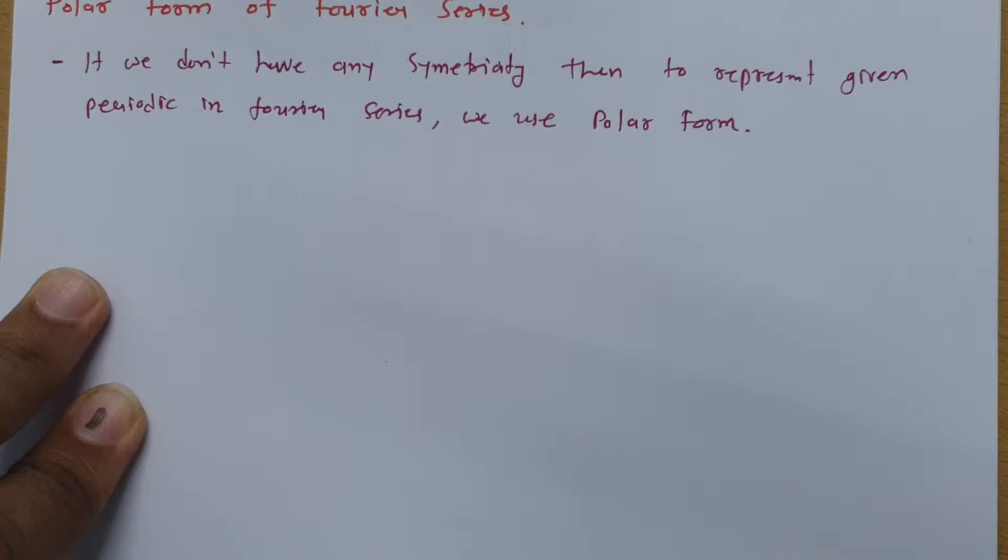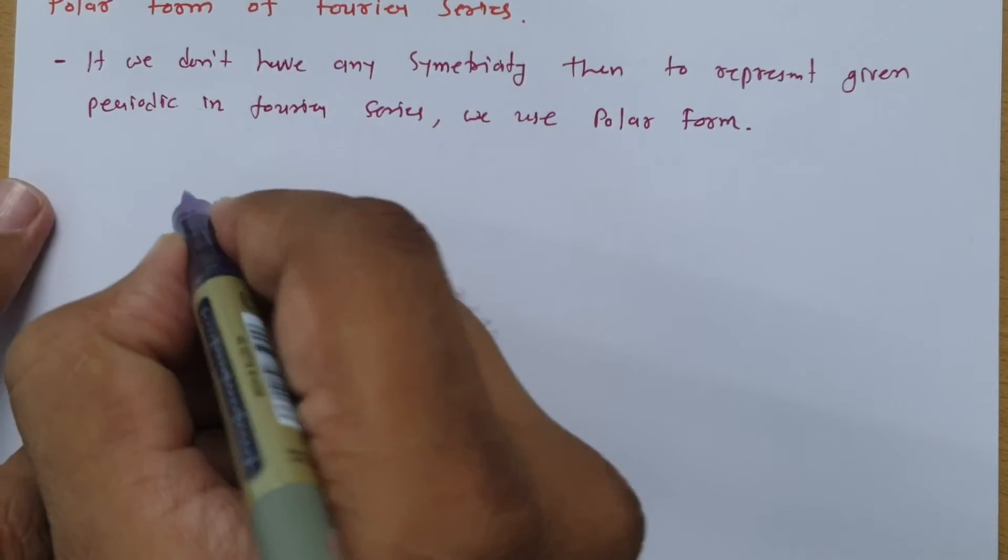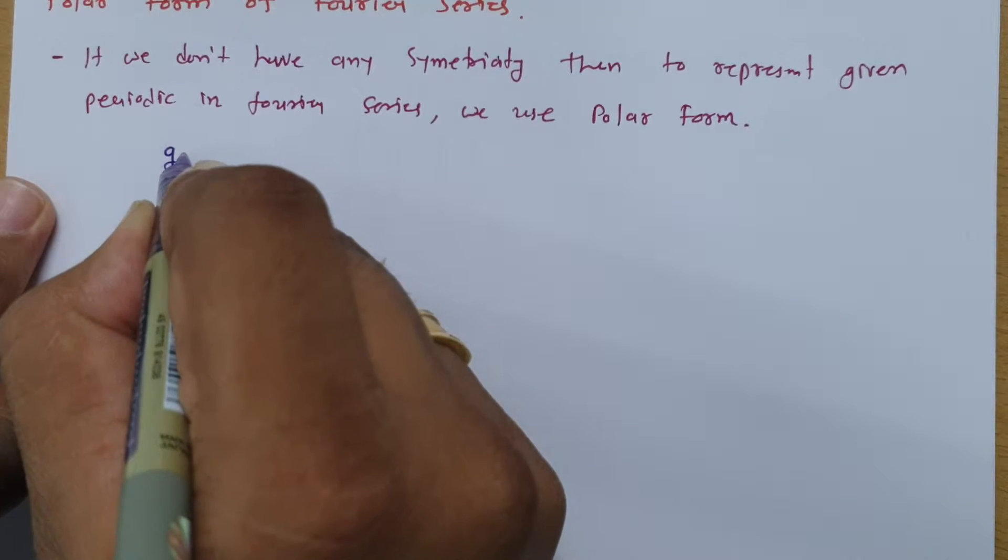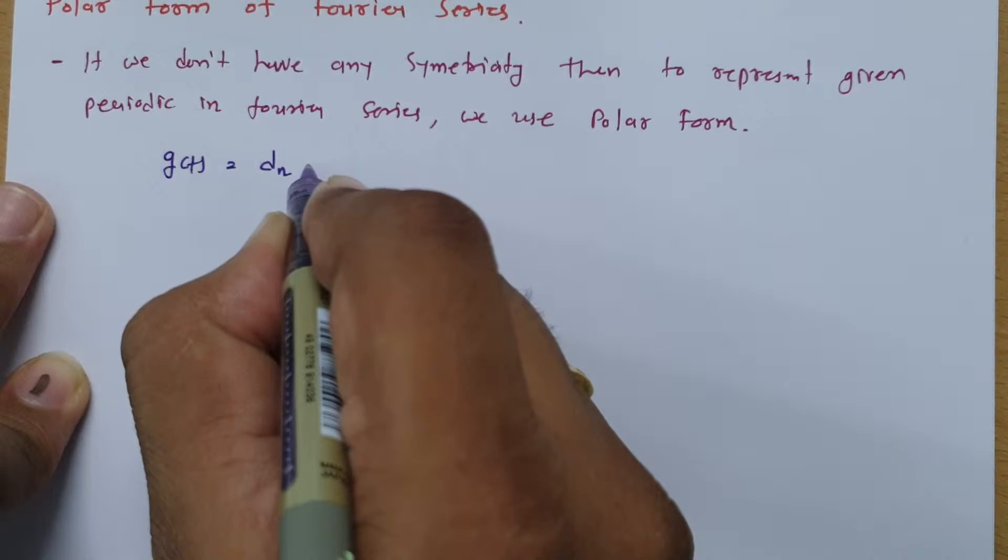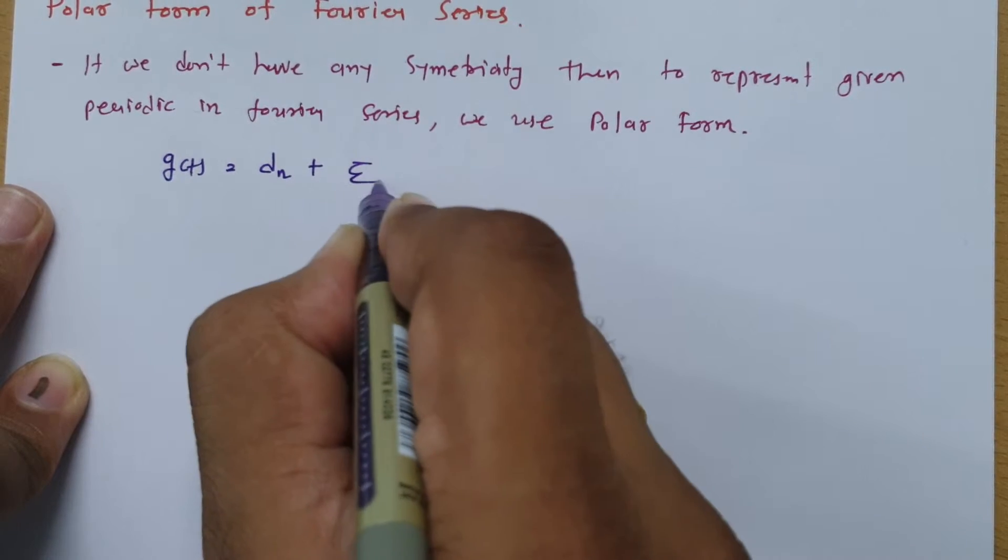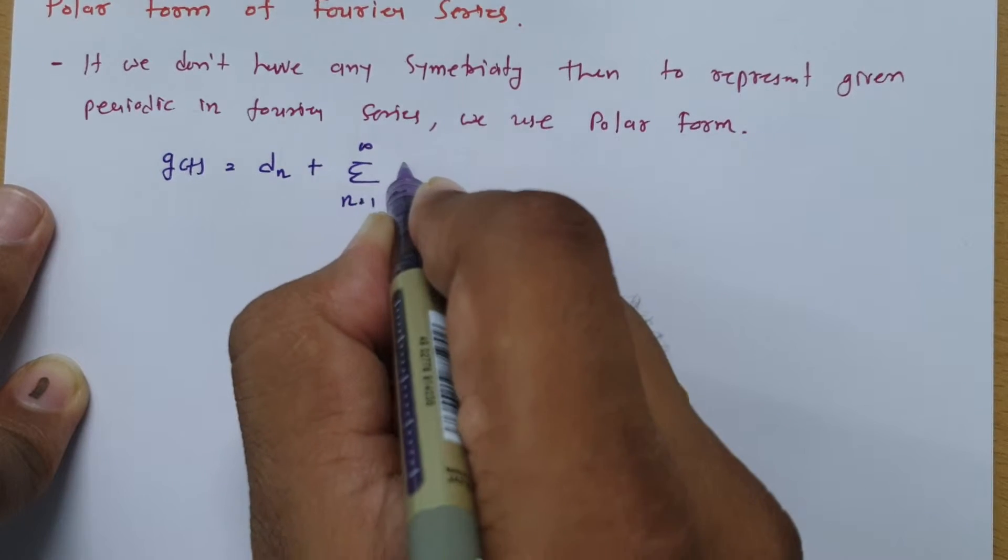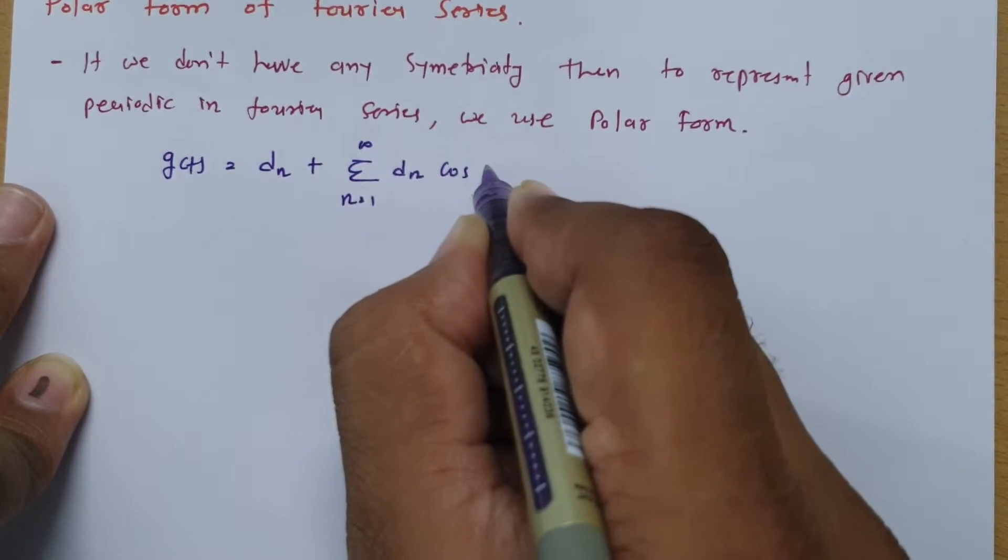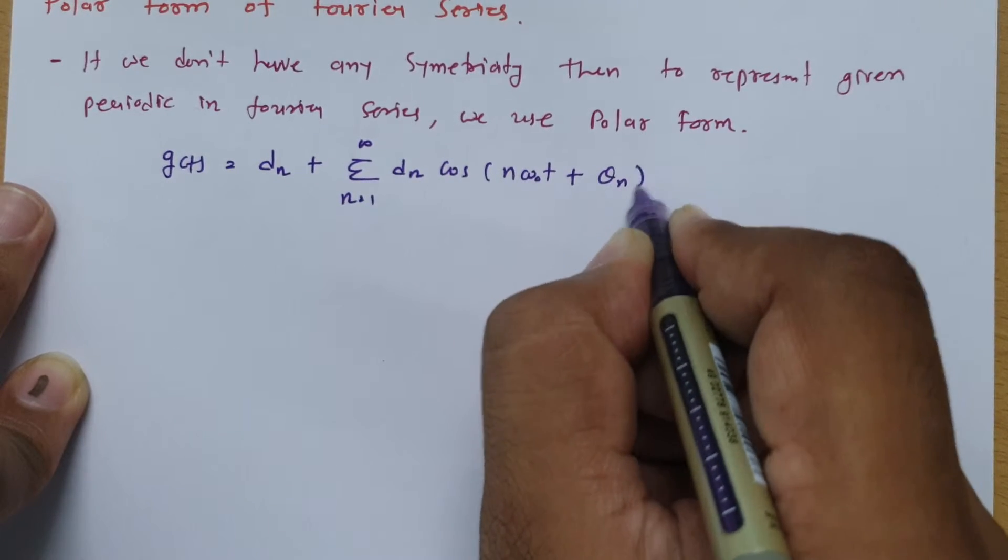Now what is that polar form? So I'll give you formula first. So see if I say I have function g of t. So that I represent by d0 plus summation varies from n is equals to 1 to infinity dn into cos of n omega 0 t plus theta n.